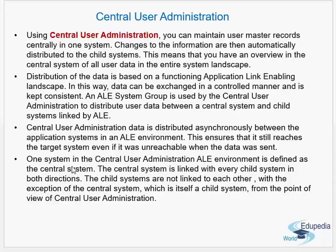Distribution of data is based on ALE — Application Link Enabling. In this way, data can be exchanged in a controlled manner and kept consistent. An ALE system group is used by central user administration to distribute user data between the central system and the child systems linked by ALE. The data is distributed in the form of ALE.